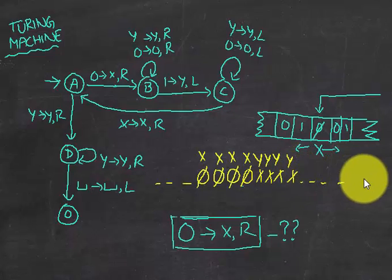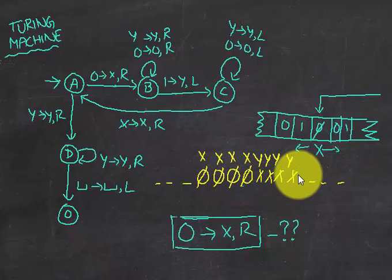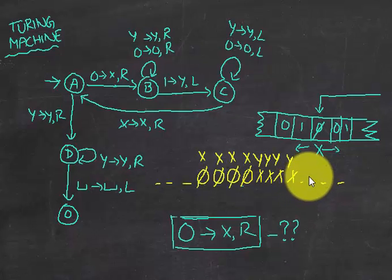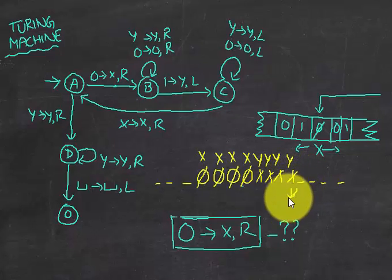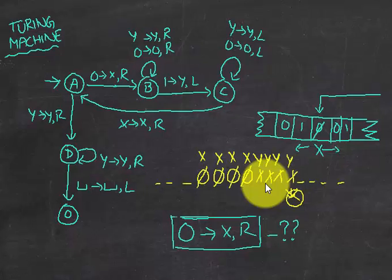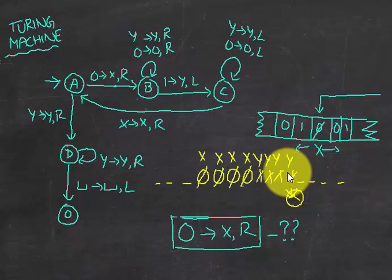It could be blank later on — this is an infinite tape so left and right is blank, and we're just considering this particular portion. From this position, if we see Y's we ignore them, and when we see a blank we go left. Then we can stop and accept this string, since there are no remaining symbols like one or zero — all have been converted to X's and Y's. This Turing machine accepts.